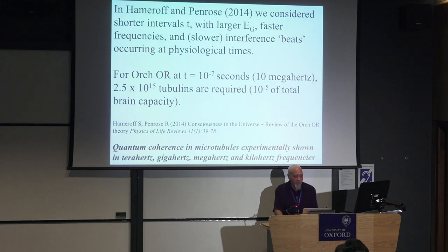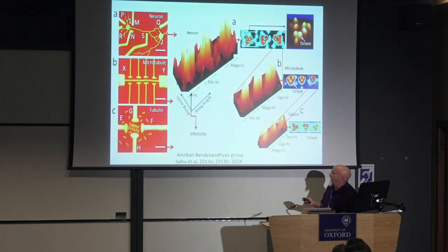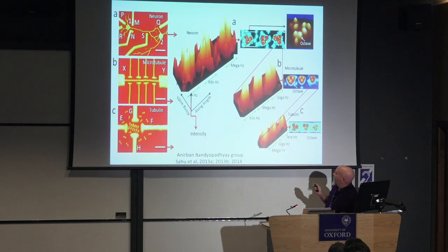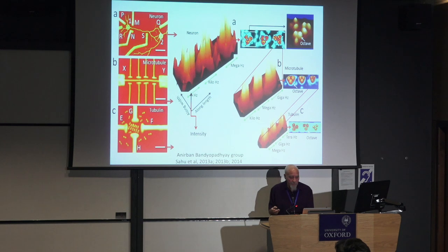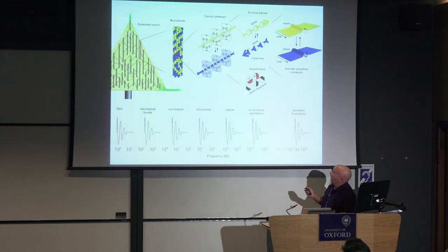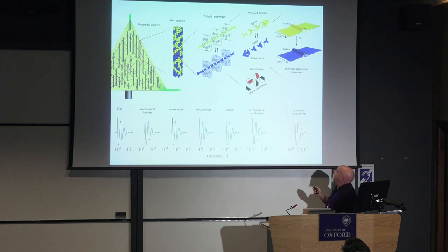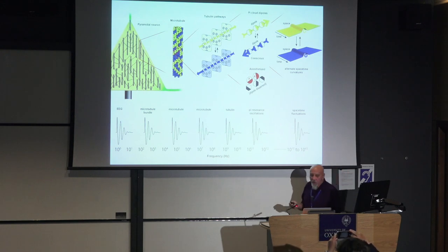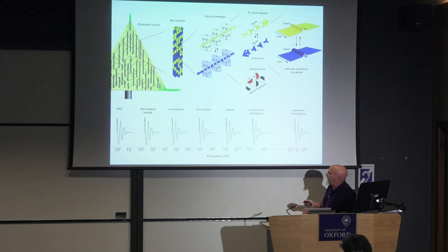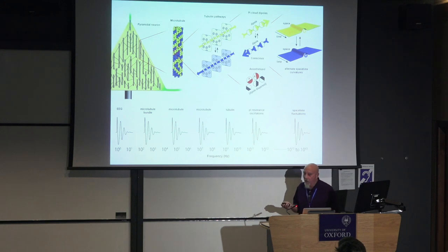Quantum coherence in microtubules has been experimentally shown in terahertz, gigahertz, megahertz, and kilohertz frequency ranges by the group of Anurban Bandyopadhyay. At three different scales, they looked at quantum effects in microtubules and found self-similar patterns at terahertz, gigahertz, megahertz, kilohertz, down to 10 kilohertz — a decoherence time of 10 to the minus 4th seconds. This gives a model of a hierarchical system, starting from a neuron going down to microtubule dipoles, and eventually to spacetime curvature, starting within the brain at 10 to the 12th hertz and getting slower as you go up in scale. Roger came up with the idea that EEG, which is in the hertz range, could be a beat frequency interference pattern of much faster vibrations.